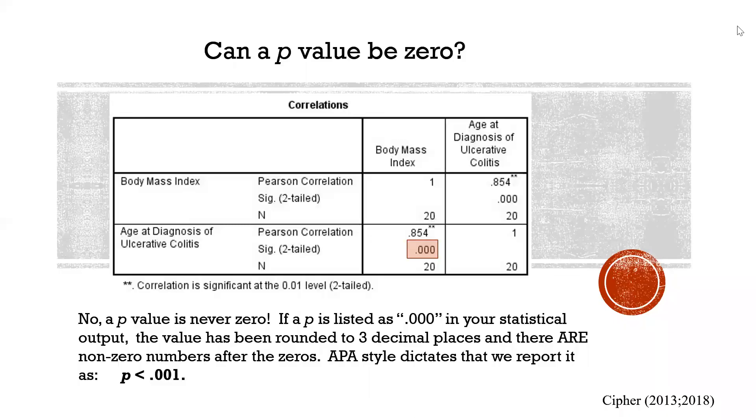Now, a p-value can never actually be absolutely 0. However, it can be very, very, very, very small. So you may see in your statistical output a significance or a p-value, such as this example here, where it's reported as 0.000 or 0.0000. However, there are actual non-zero numbers following those zeros somewhere down the line. So APA formatting dictates that we report that as p is less than 0.001.